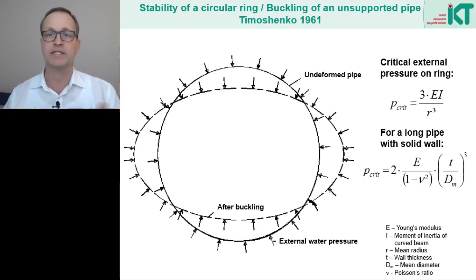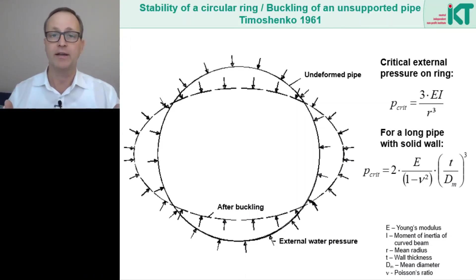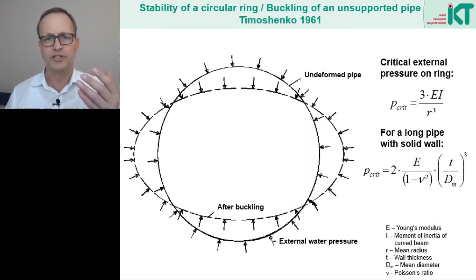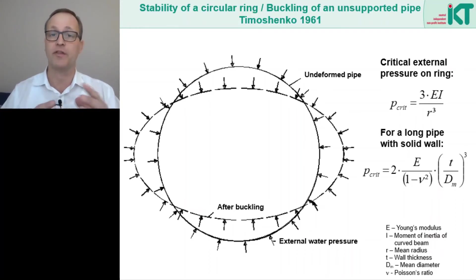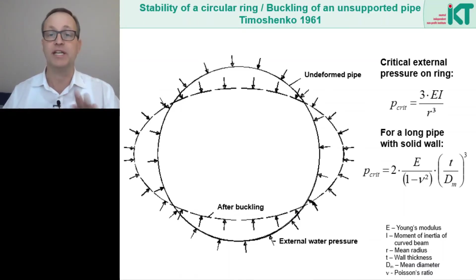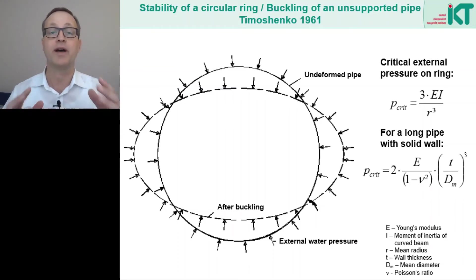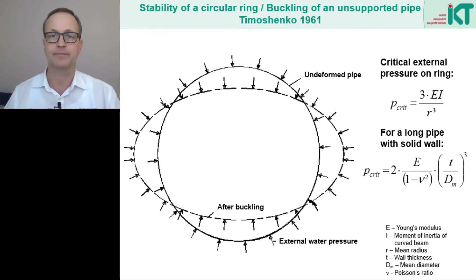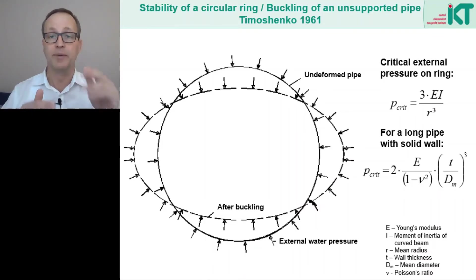For a free pipe without bedding, the critical pressure at which the pipe can buckle is lowest. Timoshenko already calculated the critical pressure for a free circular ring analytically in 1961. The critical pressure is p_crit = 3 × E × I / r³. For a solid-walled pipe the moment of inertia can be easily determined, giving p_crit = 2 × E × (t/d)³. For a very long pipe, additional stiffening can be taken into account by dividing by (1 − μ²), but on the safe side this term can be neglected. So the critical pressure of the free unbedded pipe is simply p_crit = 2 × E × (t/d)³.